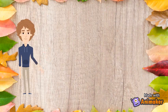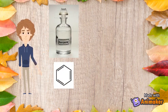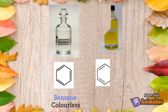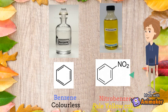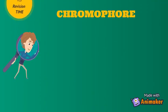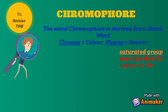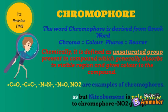To understand the concept of chromophore, we will take the example of benzene and nitrobenzene. If you see the color of benzene, benzene is always colorless. Now look at the color of nitrobenzene — it is pale yellow. This pale yellow color is due to the presence of the chromophore nitro group.